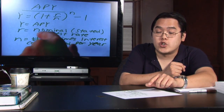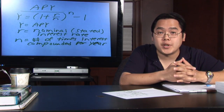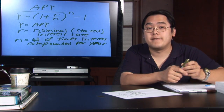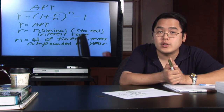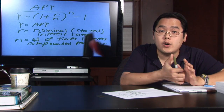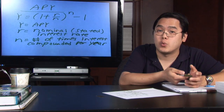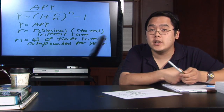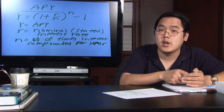And N, which shows up on two occasions — the denominator and the exponent — is the number of times the interest is compounded per year. For example, if interest is compounded quarterly, N is equal to 4. If N is 12, that means interest is compounded monthly. 365 corresponds to daily. So N really depends on how many times interest is accrued per year.